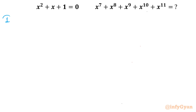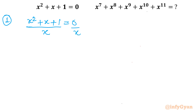I will demonstrate two methods. The first method is using purely algebra. I will consider the given quadratic equation equal to 0. We can check if x equals 0 is the solution — no. So what I am going to do is divide this equation by x, as x is nonzero. This will give us x plus 1 plus 1 by x equal to 0.